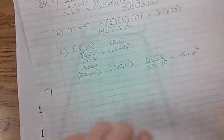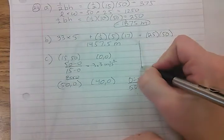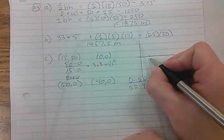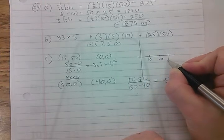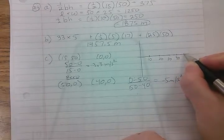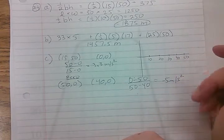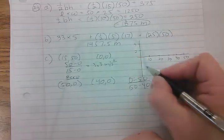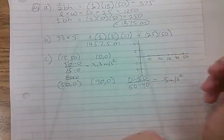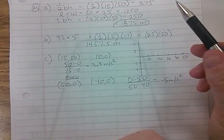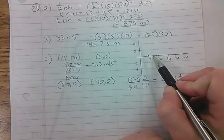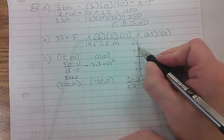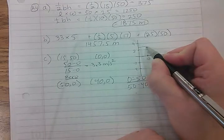So if we graph the acceleration, I will do that right here. Between 0 and 15 seconds, the object has an acceleration of 3.3, so that's about 3.3, so it's going to look like that.